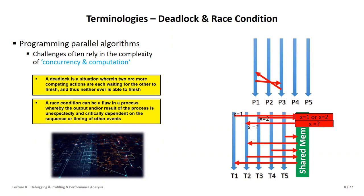Another problem is the race condition. In shared memory programming, if you have a shared memory variable and different threads write to it simultaneously without serialization or protection, you could end up with x equals one or two depending on which thread writes last. This is a race condition across the shared variable x and is of course a problem.